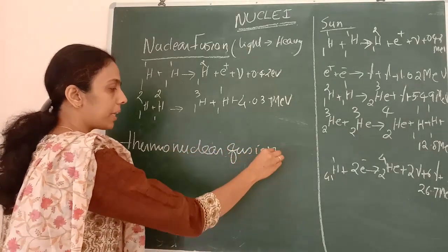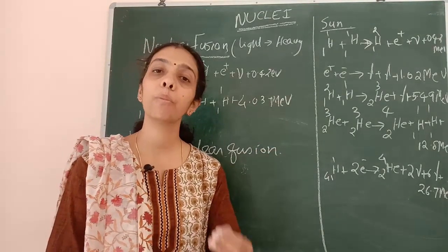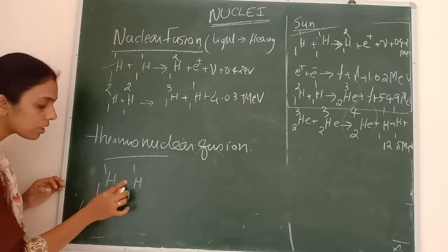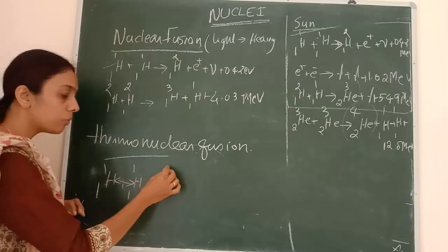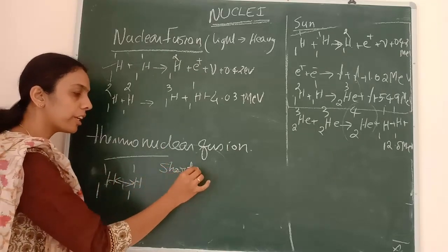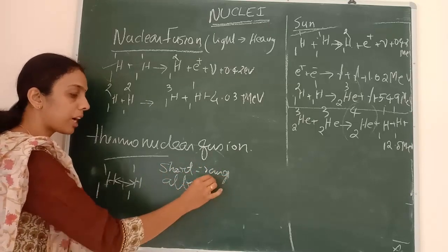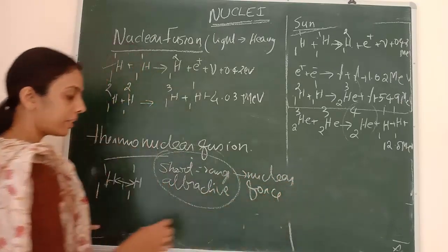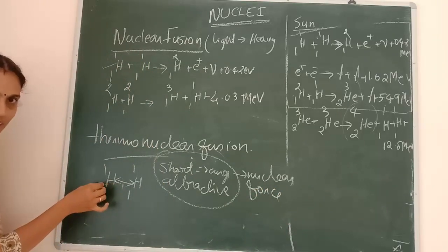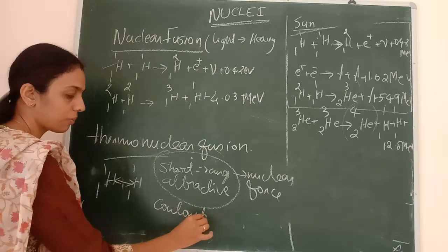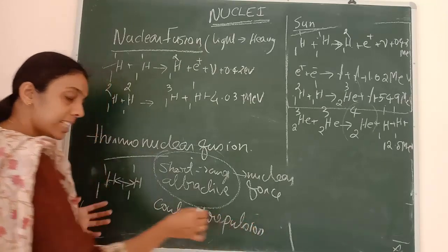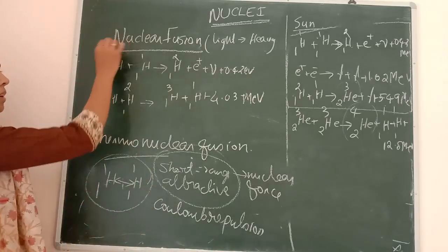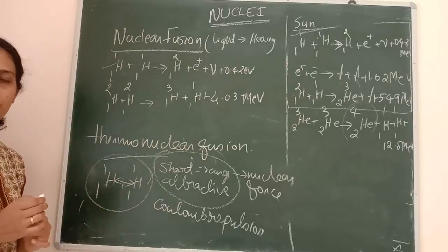In thermonuclear fusion, two protons (₁H¹ and ₁H¹) must come very close to each other. When they do, the short-range attractive nuclear force comes into effect. However, both are positive charges, so coulombic repulsion also acts. The nuclei must attain energy greater than this coulombic repulsion to overcome it — only then will nuclear fusion happen.